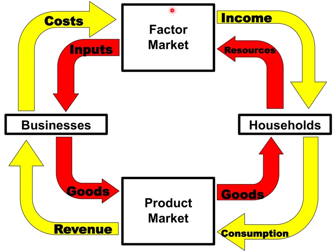So let's start with the factor market on the top. Here the households are the sellers, and the businesses are the buyers. Households are selling the land, labor, capital, and entrepreneurship — the factors of production, or economic resources. These become economic inputs to the business.